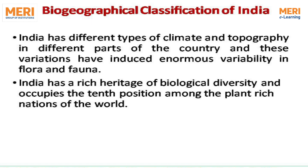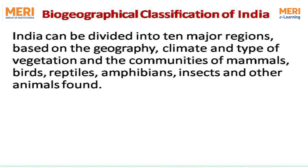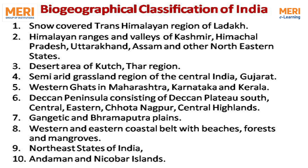Regarding the biogeographical classification of India: India has different types of climate and topography in different parts of the country, and these variations have induced enormous variability in flora and fauna. India has a rich heritage of biological diversity and occupies the 10th position among the plant-rich nations of the world. India can be divided into 10 major biogeographical regions based on geography, climate, type of vegetation, and communities of mammals, birds, reptiles, amphibians, insects, and other animals.